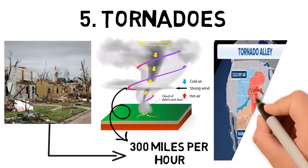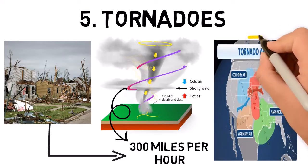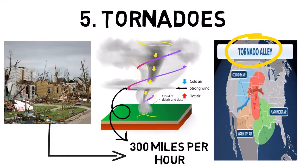Tornadoes are most common in the United States, particularly in an area known as Tornado Alley, but they can occur in many parts of the world.